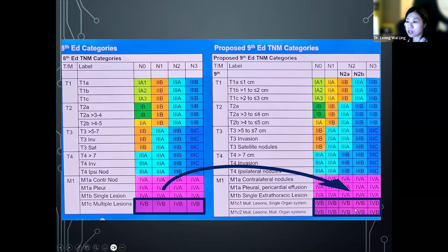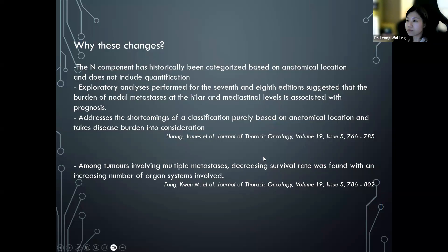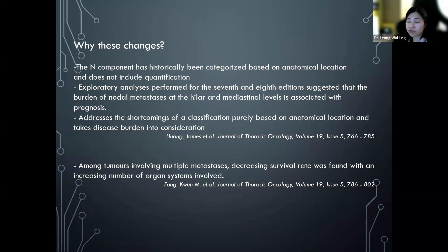Why were these changes made? The N component has historically been categorized based on anatomical location without quantification. Exploratory analysis from the seventh and eighth editions suggested that the burden of nodal metastasis at the hilar and mediastinal levels is associated with prognosis. The new N2a/N2b subdivision addresses the shortcomings of purely anatomical classification by taking disease burden into consideration. It has also been shown that among tumors with multiple metastases, a decreasing survival rate is associated with an increasing number of organ systems involved.